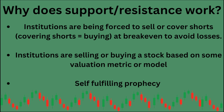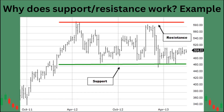In terms of institutions being forced to buy and sell at break-even points — at this $460 support level, this green line, we can see the stock keeps coming down to $460 and moving higher. Let's say BlackRock or an active firm like Citadel is coming down to this $460 support level — this is where they've bought the stock in the past, therefore it's where they want to buy it again.